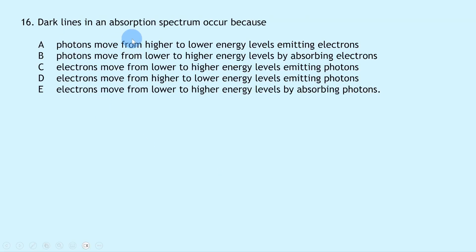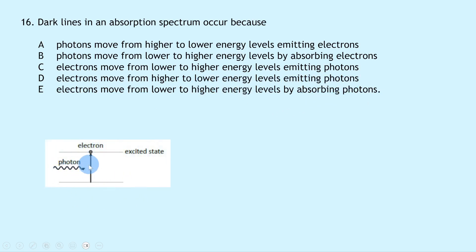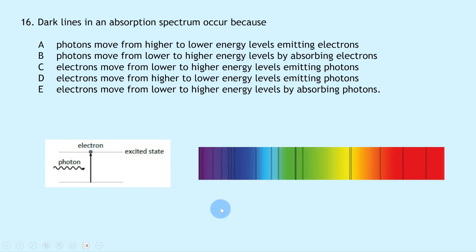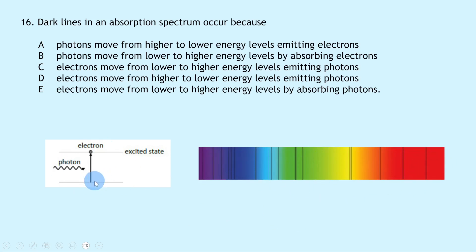Question 16 asks why dark lines appear in an absorption spectrum. The correct explanation is that electrons move from lower to higher energy levels by absorbing photons. These electron transitions cause dark lines in the continuous spectrum to form the absorption spectrum — one electron transition corresponds to one dark line. The answer is E.